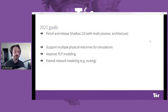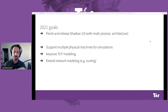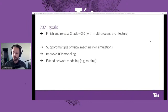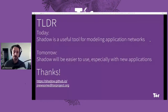Our goals for next year: we plan to do a release of Shadow 2.0 early next year with the new multiprocess architecture. The next big change we're looking at is supporting running simulations across multiple physical machines rather than just one big machine, which should make it easier to scale large simulations. We're also looking at adding additional network modeling support, including better TCP modeling accuracy and support for modeling things such as routing. So you can use this today, and it's going to be a lot easier to use soon.